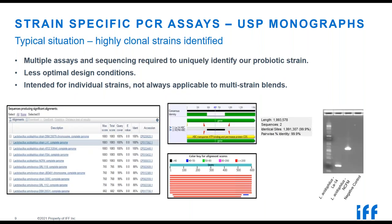What we typically see is that highly clonal strains are identified — within our own portfolio, in the public realm, or manufactured by a competitor. When this is the case, multiple assays and sequencing are typically required to uniquely identify our probiotic strain. It also leads to less optimal design conditions because we have limited unique regions to choose from. For example, two strains with a pairwise identity of 99.9% — meaning they're 99.9% genetically identical — can make it very difficult to apply strain-specific assays to a mixed product.